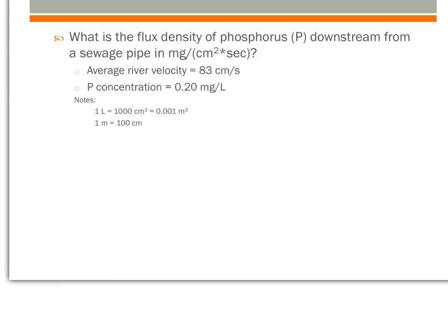Here we want to calculate the flux density using the information that they've given us. We know from the last video that the equation we want to use is J for flux density equals the concentration times velocity.